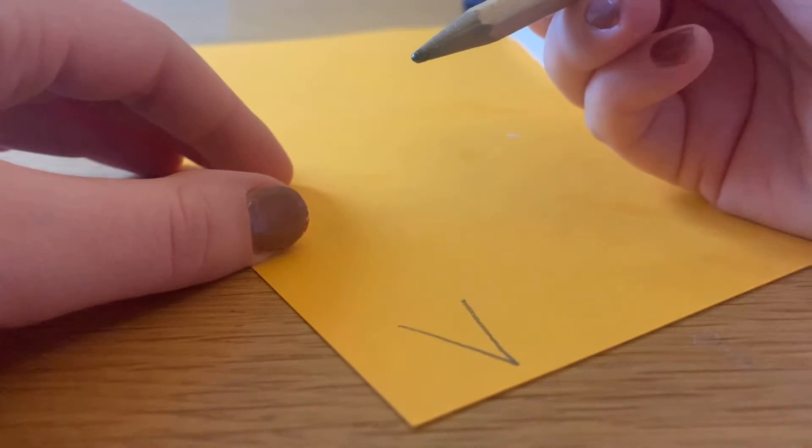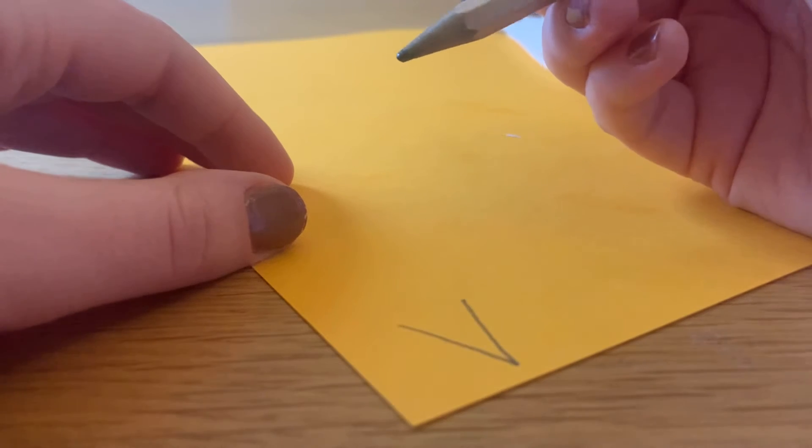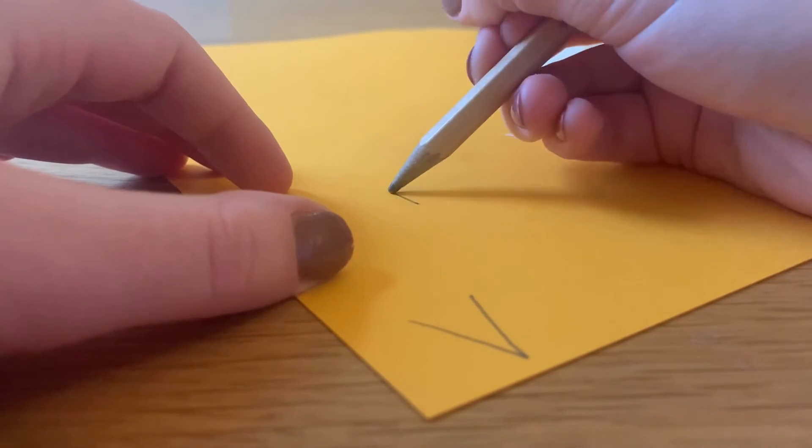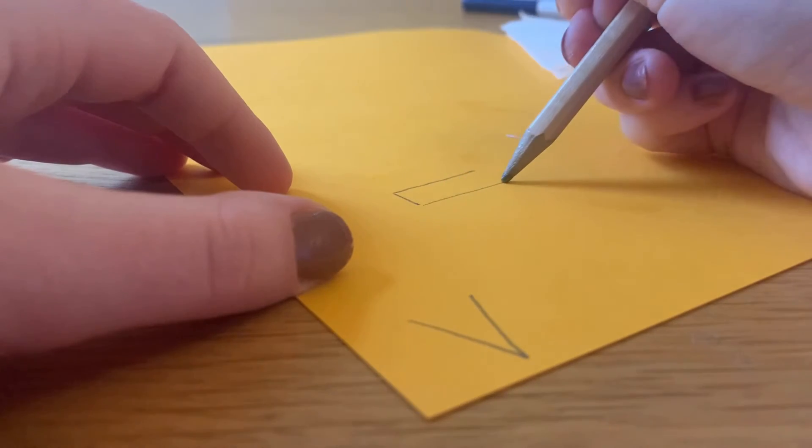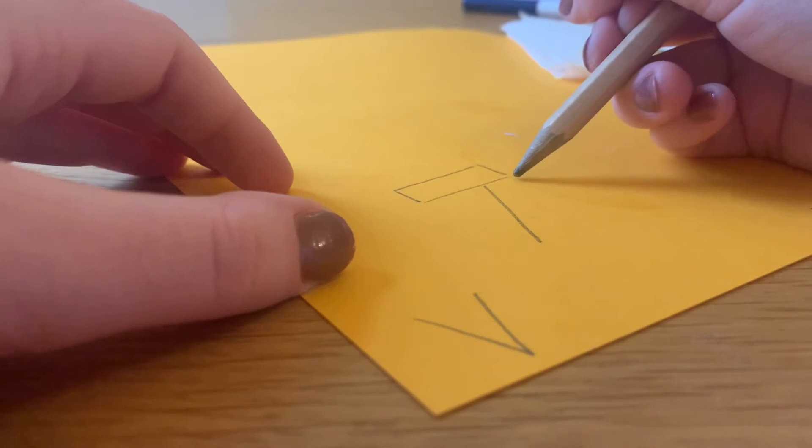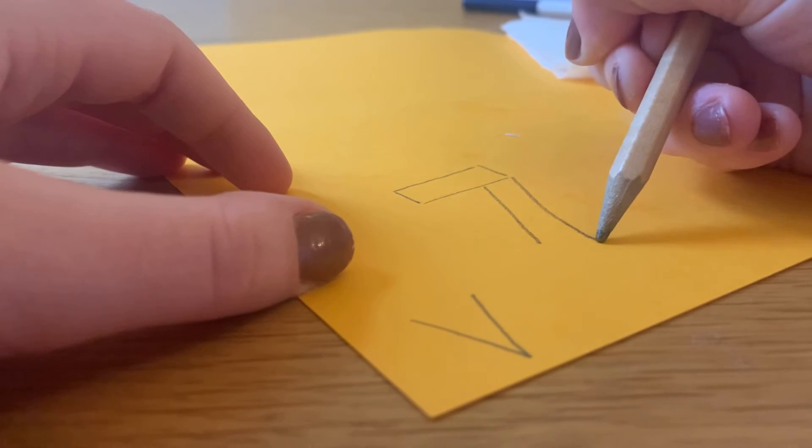Now get your orange card. You only need a very small bit of your orange card to make your carrot nose of your snowman and the scarf. So just draw a triangle or a V shape, and then for the scarf you want to do two rectangles, just like I'm showing you on the screen now.